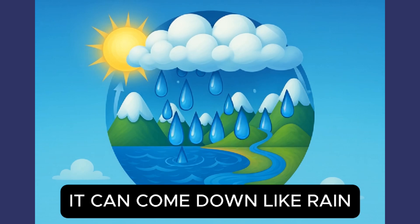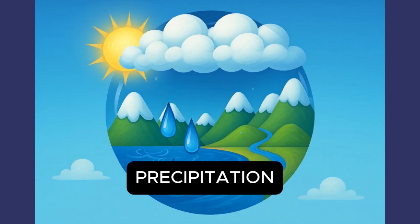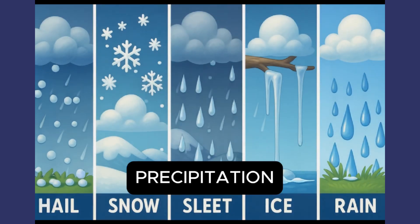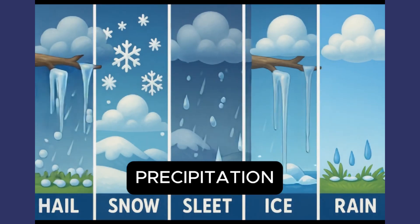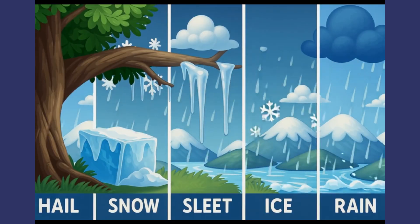It can come down like rain — we call that precipitation. Hail, snow, sleet, ice, or rain.